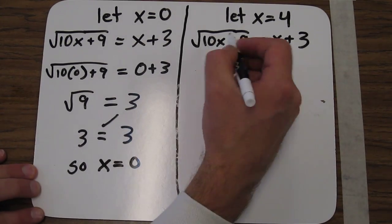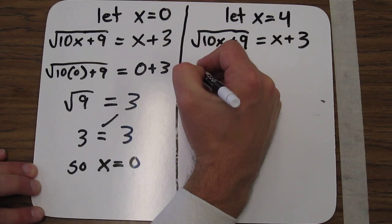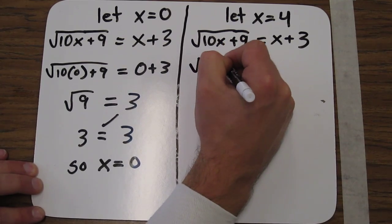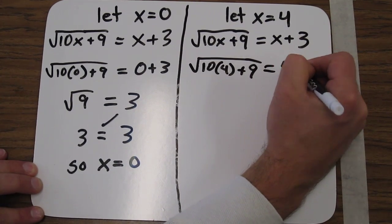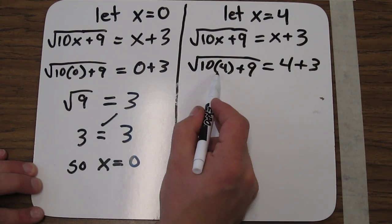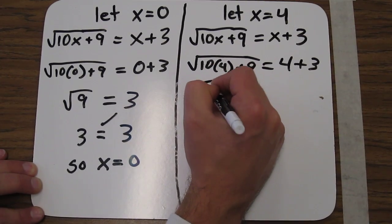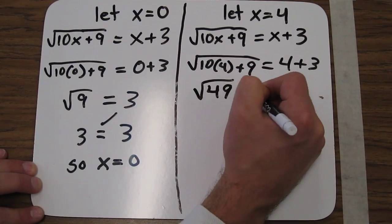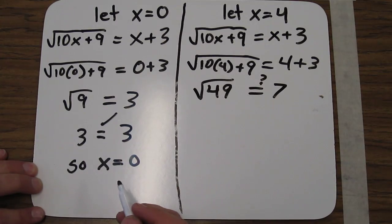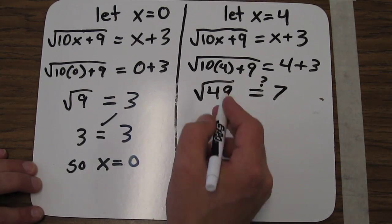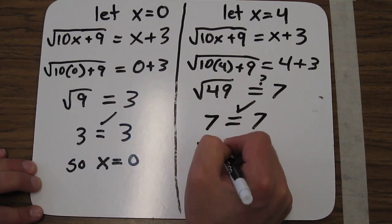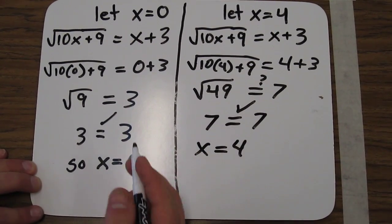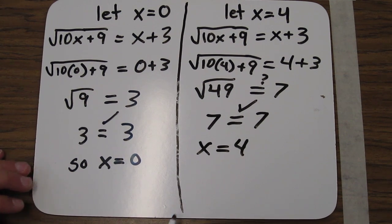Let's check this one to see if it works. I plug in the 4, so I get 10 times 4 plus 9 equals 4 plus 3. So this would be 40 plus 9 is the square root of 49. And we want to know does that equal 7? Well, the square root of 49 is 7. Again, 7 equals 7. So x equals 4 is also a solution. So this time we had no extraneous solutions. But that won't always be the case.